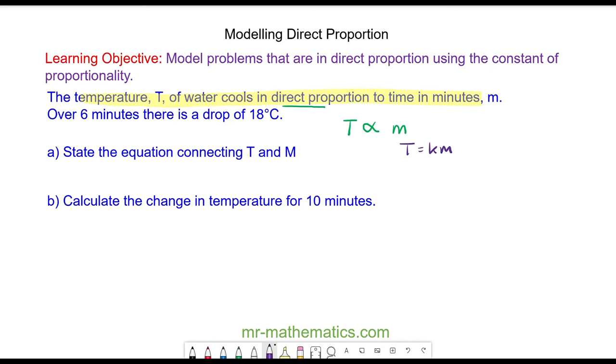We can see now over six minutes there is a drop of 18 degrees. So here we have T equals 18 degrees and m equals 6. We can substitute these values into our formula. So 18 equals k multiplied by 6, and we divide both sides by 6. We can work out the value of k, so k equals 3.